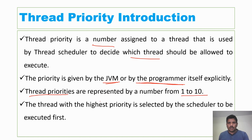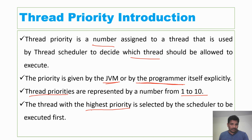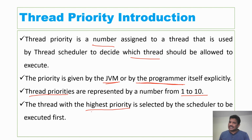The minimum priority number is 1 and the maximum priority is 10. The highest priority thread is selected by the thread scheduler to be executed first, then the lowest priority thread. Once thread priorities have been assigned, the highest priority thread will be executed first, then the lowest priority thread.